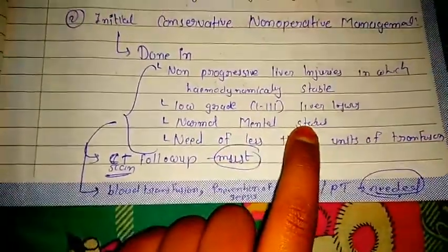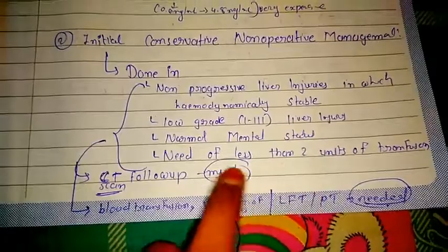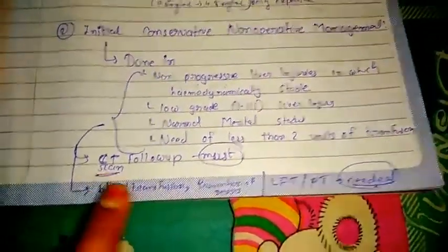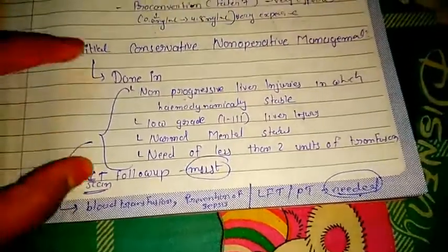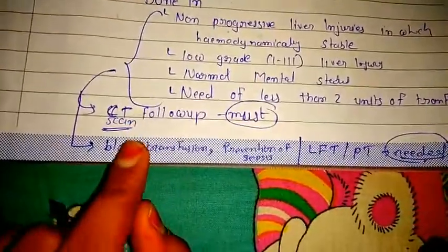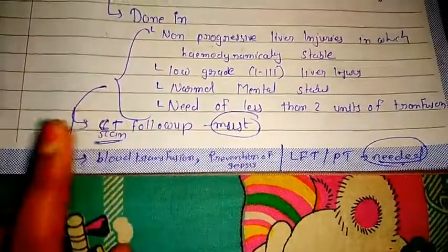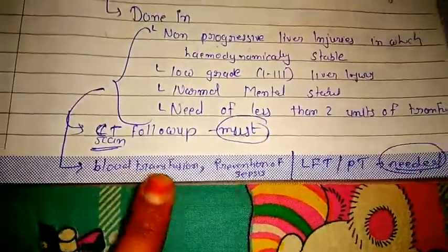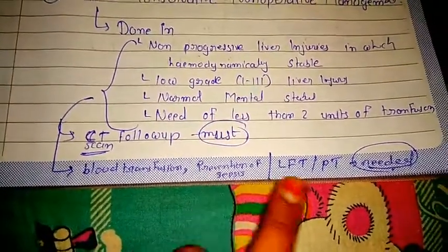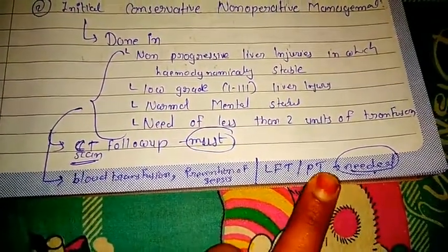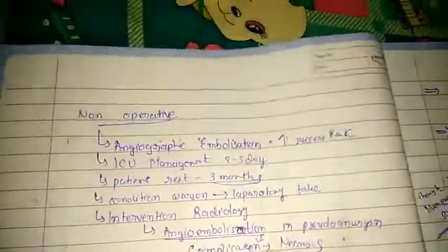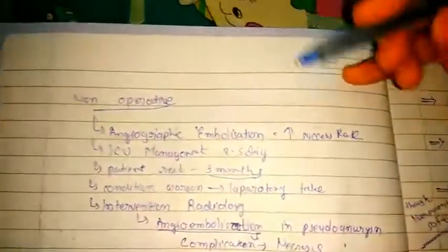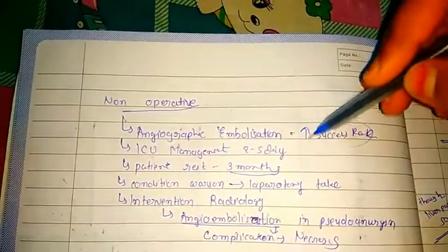Further criteria: normal mental status and need for fewer than 2 units of blood transfusion. Management includes CT scan followed by follow-up CT scan, blood transfusion, prevention of sepsis, liver function tests, and prothrombin time. For non-operative management, angiographic embolization is first-line and has a very high success rate.